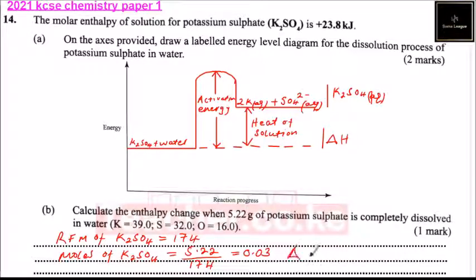So change in enthalpy is equal to 0.03 multiplied by 23.8, which we have been given up there as our molar enthalpy. That is 23.8. And that should give you 0.714 kilojoules. So that is how we work out that. So that is the change in enthalpy. And you will be able to get your mark. So in total you will be able to get 3 marks.